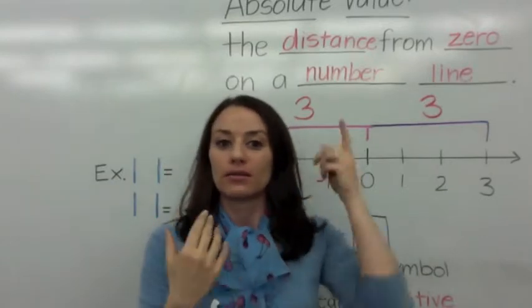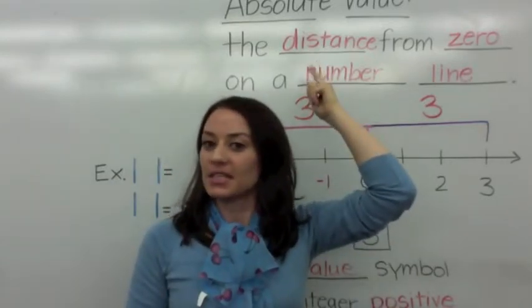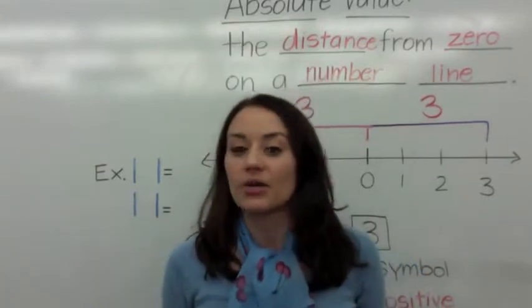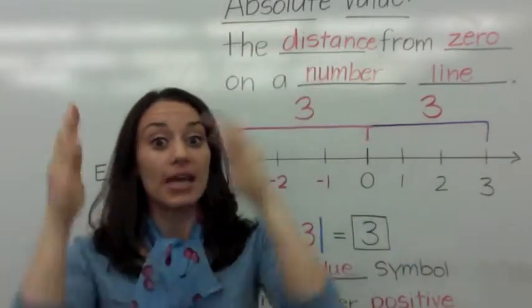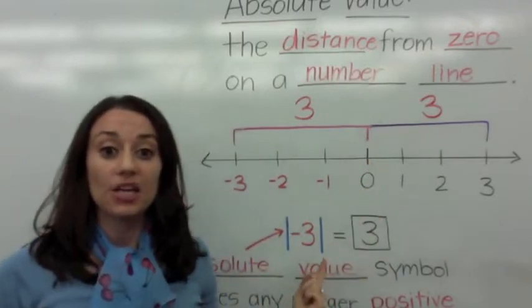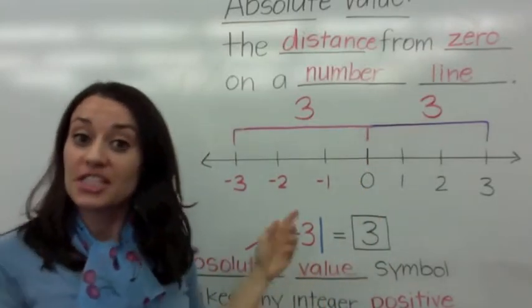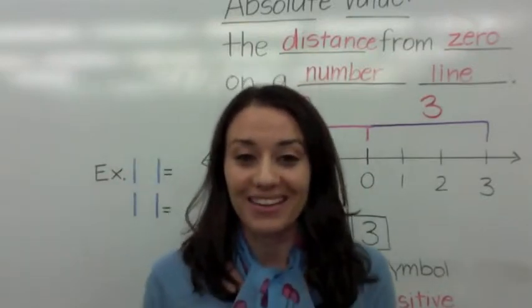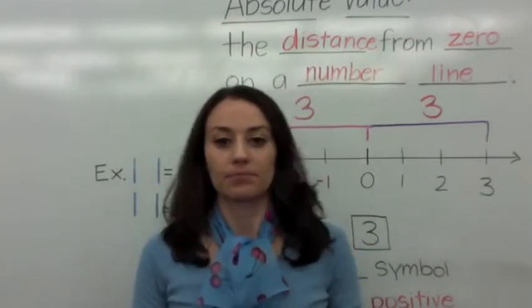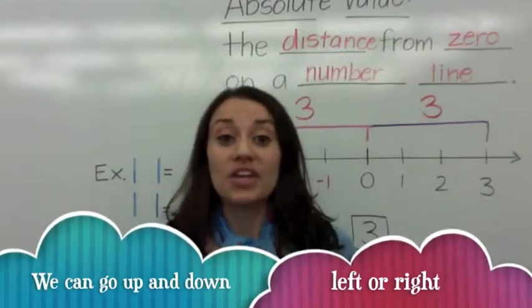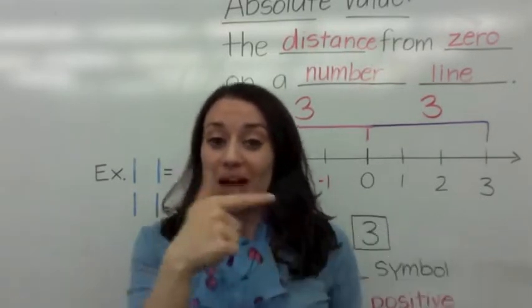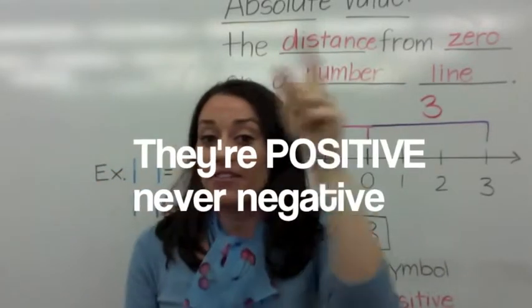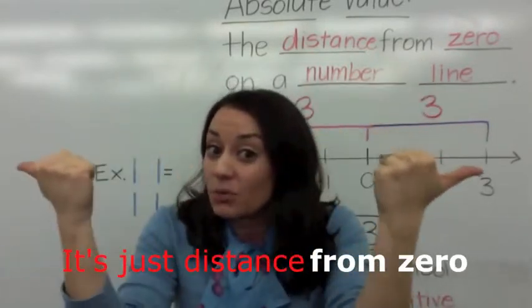Absolute value is distance, so you can go really any direction. Talking absolute value — they're positive, right? The absolute value symbol makes any integer positive, because it's just the distance from zero. We can go up and down, left to right, talking absolute value. They're positive, never negative, because it's just the distance from zero.